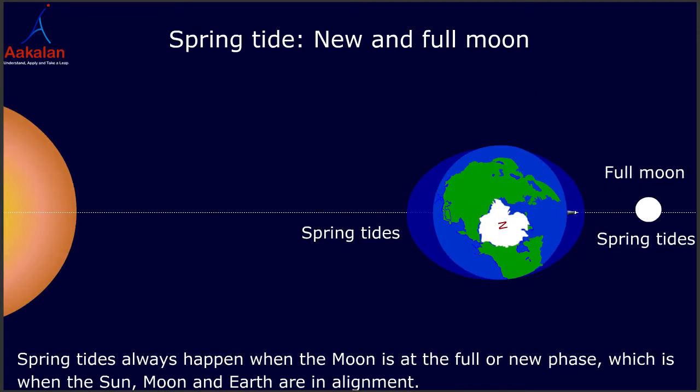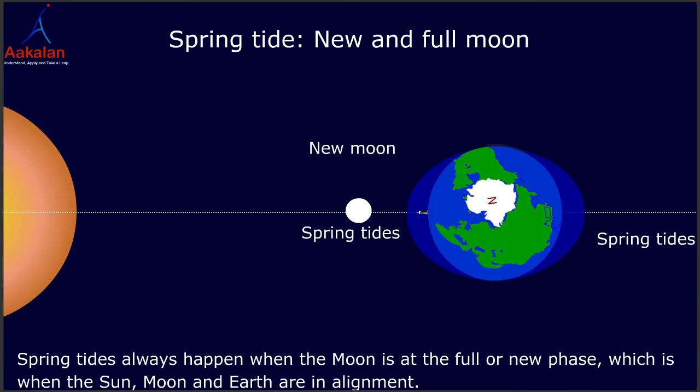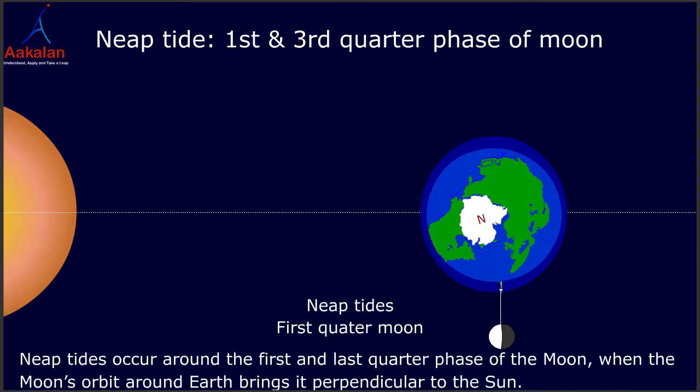Spring tides always happen when the Moon is at the full or new phase, which is when the Sun, Moon, and Earth are in alignment. Neap tides occur around the first and last quarter phase of the Moon, when the Moon's orbit around Earth brings it perpendicular to the Sun.